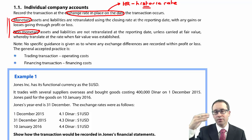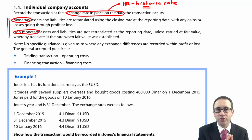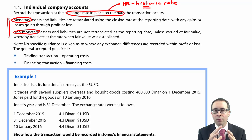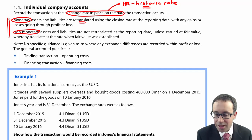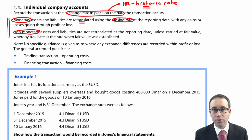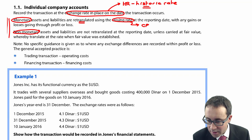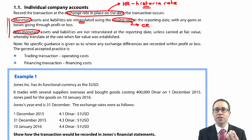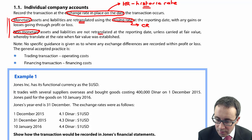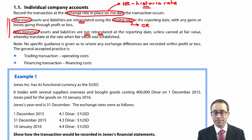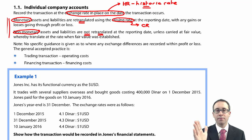Within the statement of financial position, you need to identify what's monetary and what's non-monetary. The rules state that if something is monetary, you re-translate that monetary item at the closing rate — abbreviated to CR. If it is non-monetary, it is not re-translated; you leave it. So the rules are: translate at the date the transaction takes place; then if it's monetary, re-translate at the closing rate; if it's non-monetary, you do not re-translate.